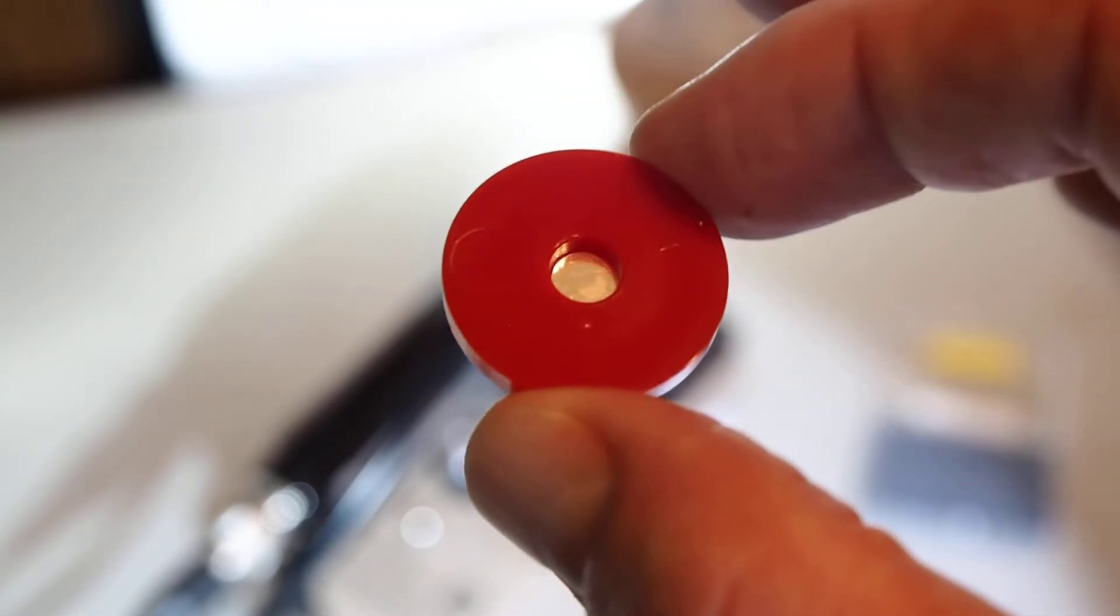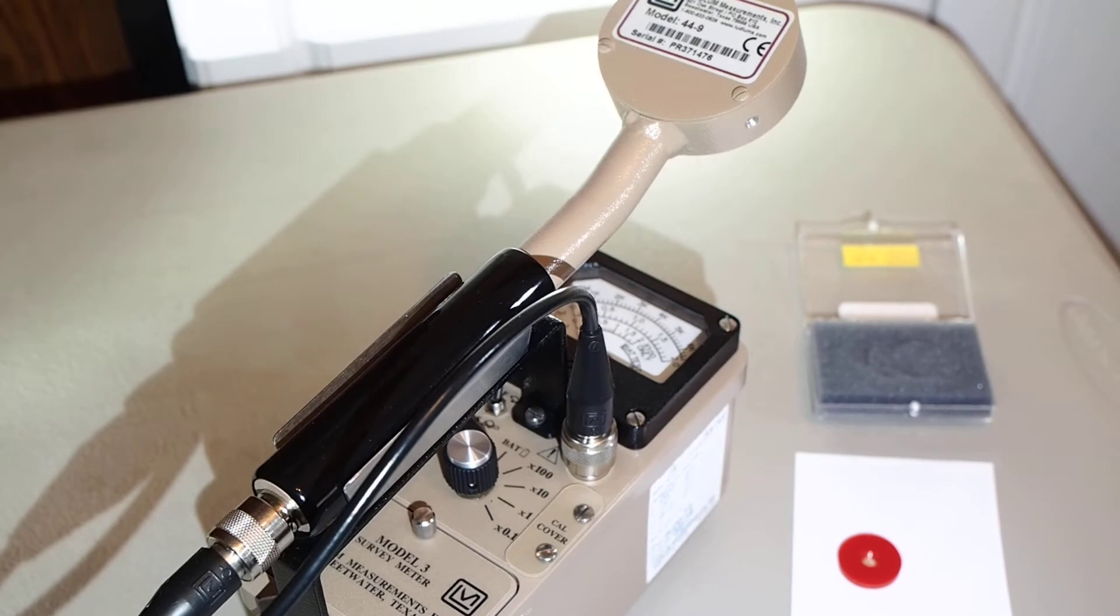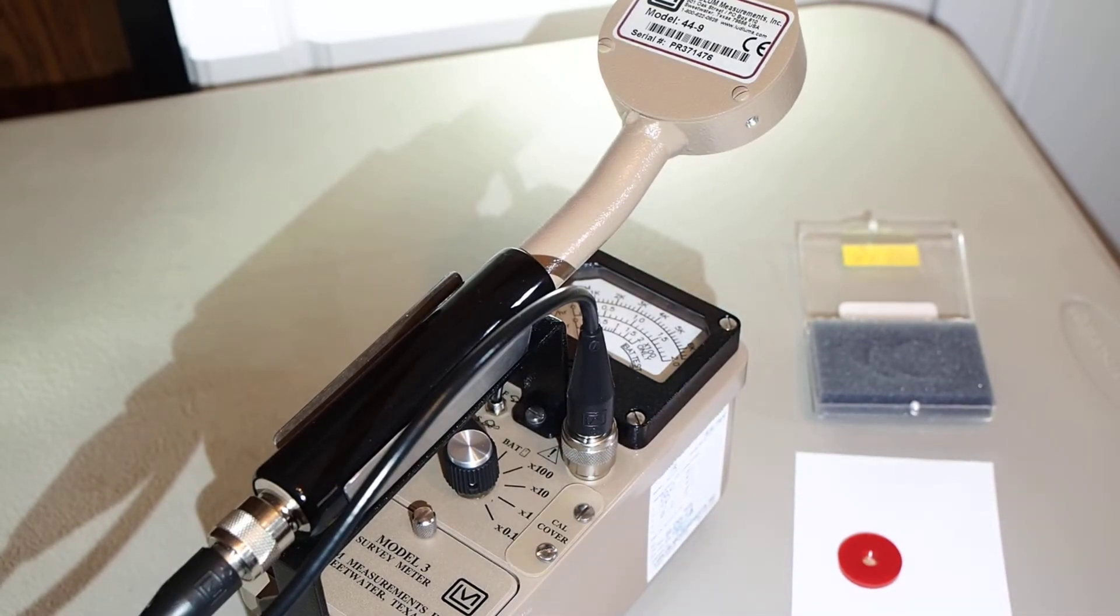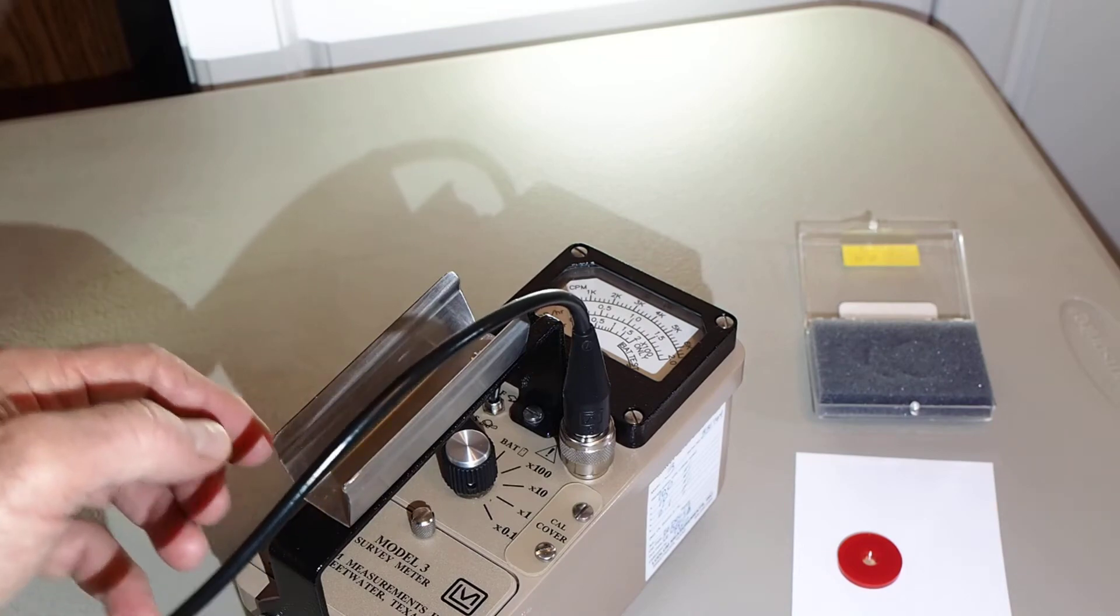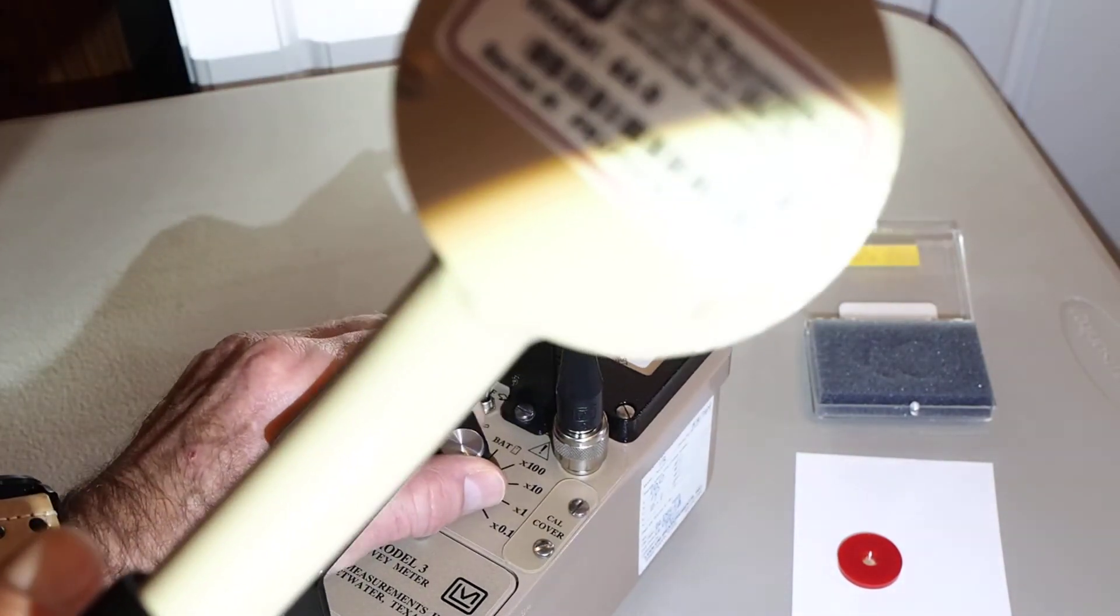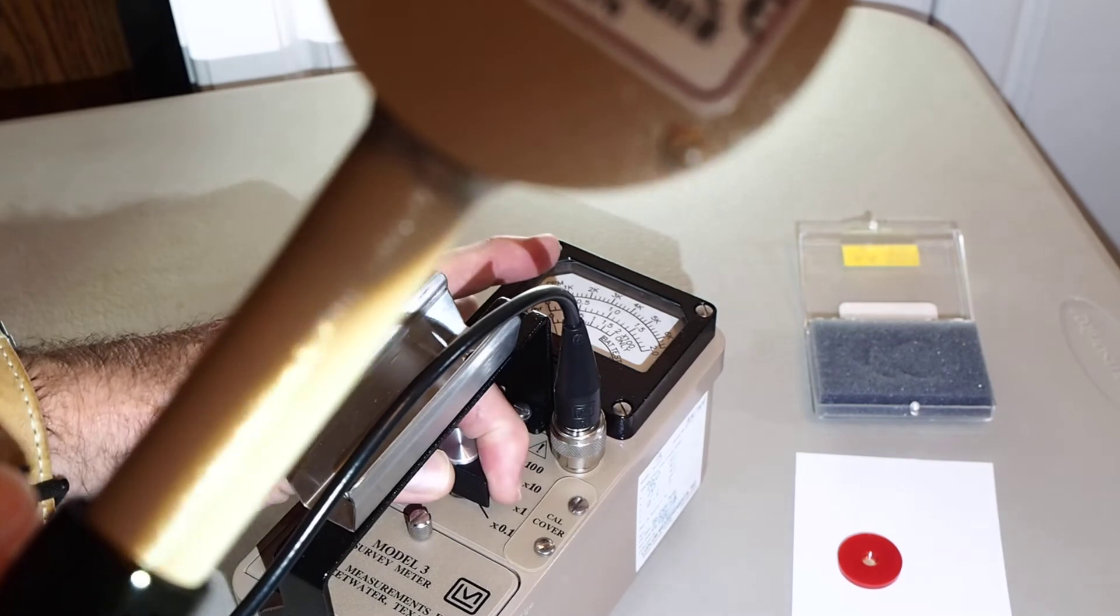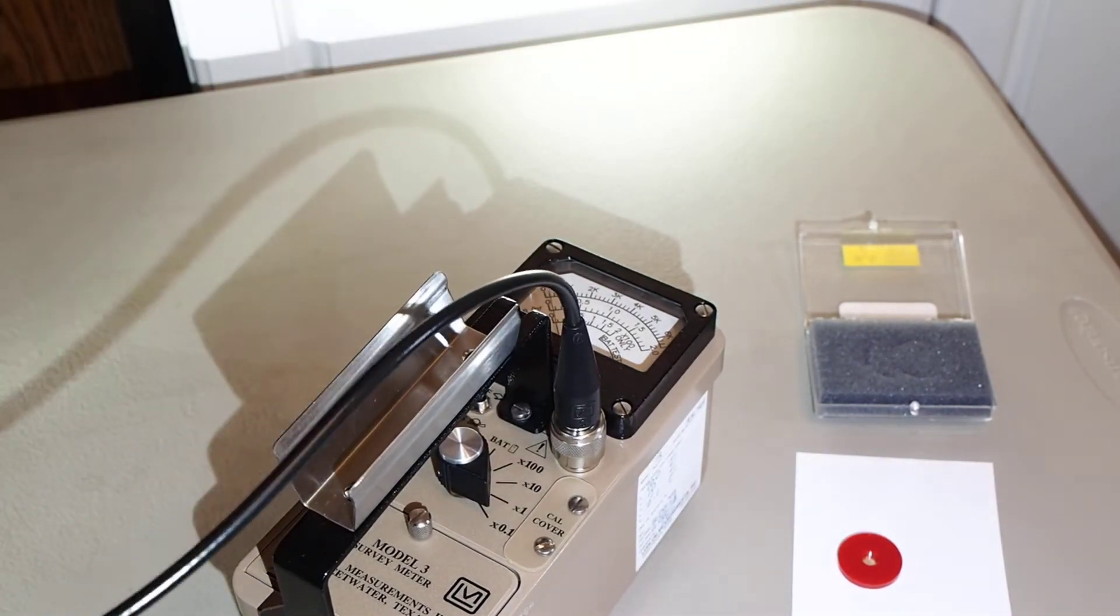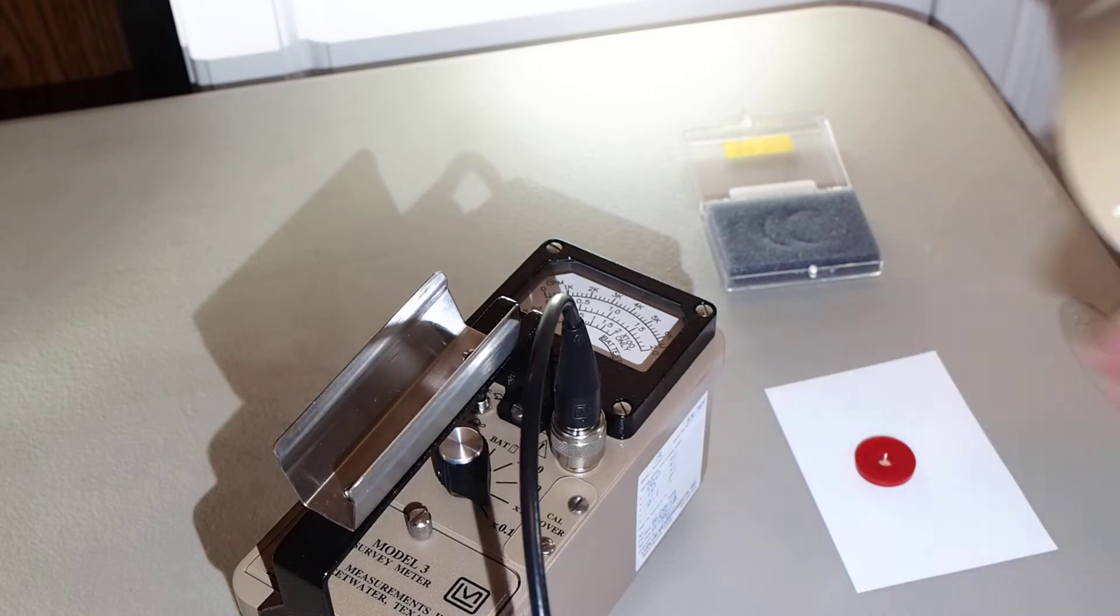So we'll go ahead and take a couple of readings of this and see what polonium-210 does to our meter. We'll move our detector. Check our battery. Showing good for battery. We'll start off on the 0.1 scale here. Reset our instrument.